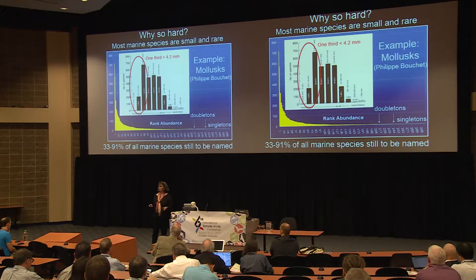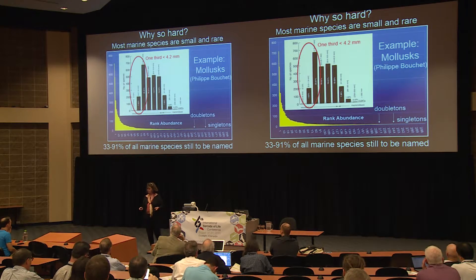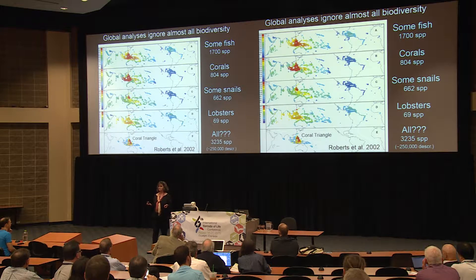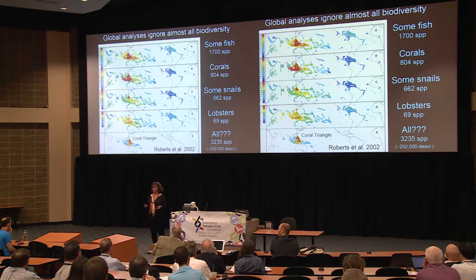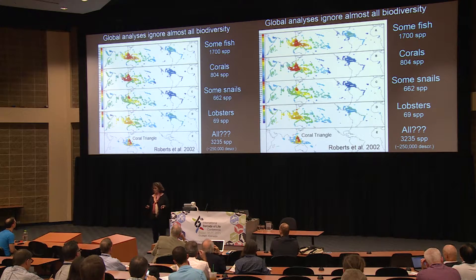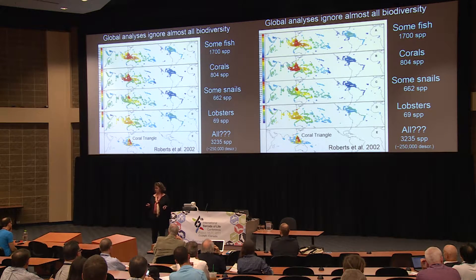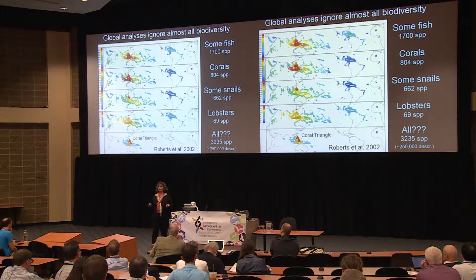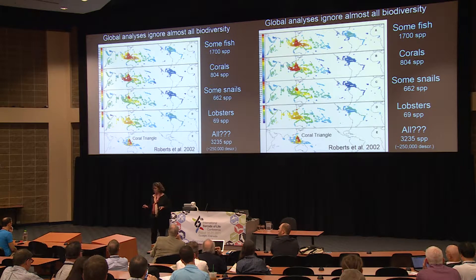The fact that most organisms don't have names is why DNA barcoding is so important in this context. As a result, most global analyses of diversity in the ocean tap into just a tiny fraction of actual diversity. This is a graph showing the diversity of organisms on coral reefs published in 2002 by Callum Roberts — quite an influential paper — with a red hot spot sitting over the coral triangle. But the tiny fraction of organisms used to make these calculations — some fish, most of the corals, some snails and lobsters, all told a little over 3,000 species — despite the fact that a quarter of a million species in the ocean actually have names.